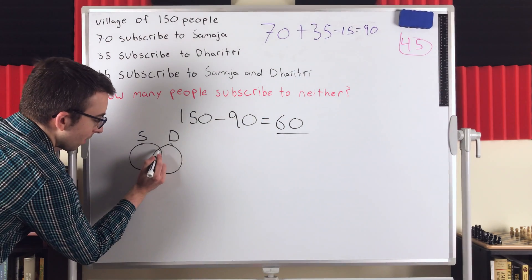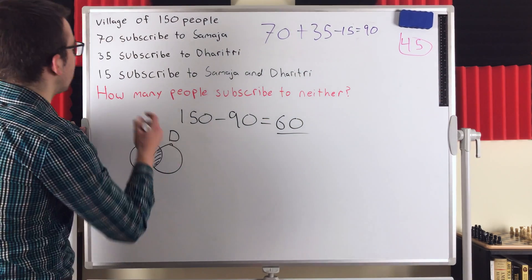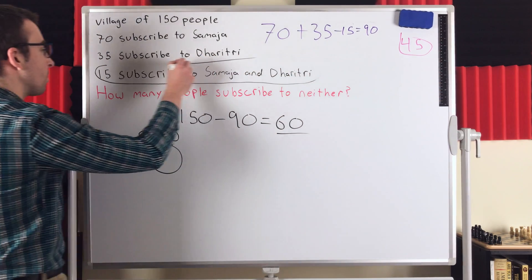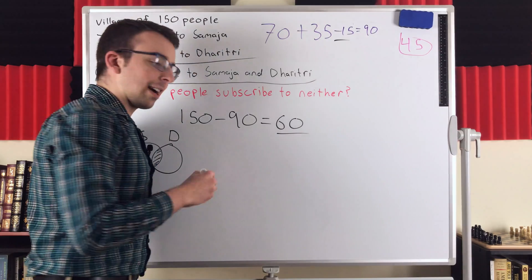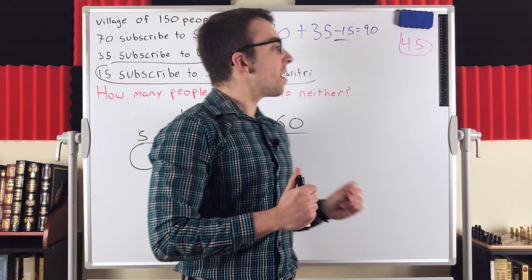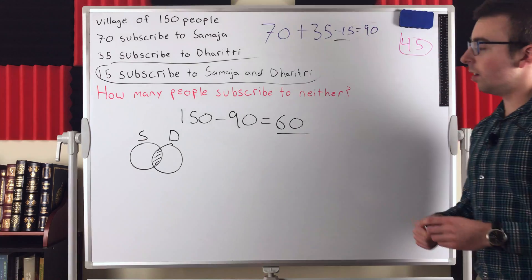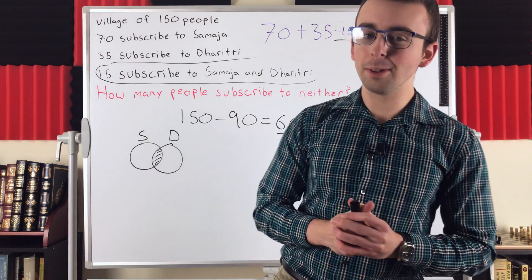But when we do that, we've counted this intersection of people who are subscribed to both papers. We've counted them twice. So we subtract them out once to correct our count. And that's how that works. A pretty basic example of a counting problem. And this is definitely the best, I think, most elegant way to solve the problem.